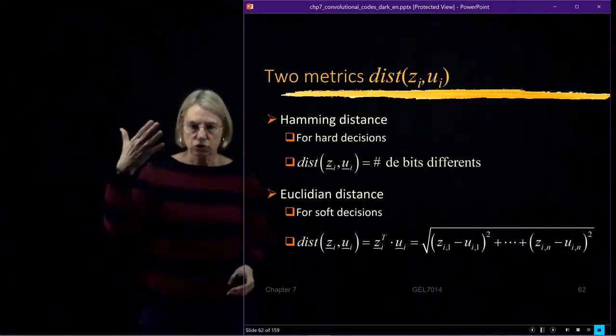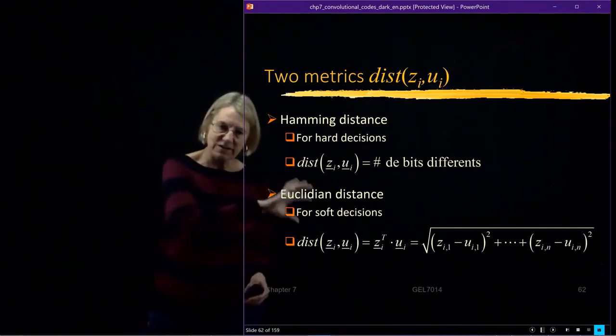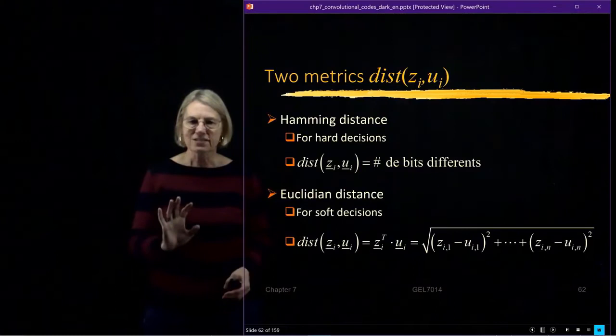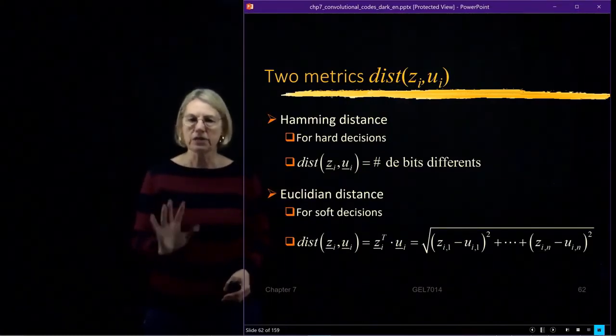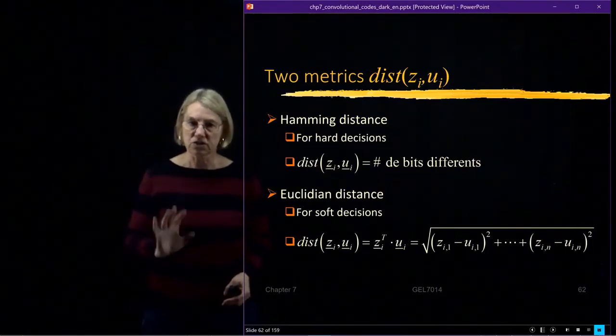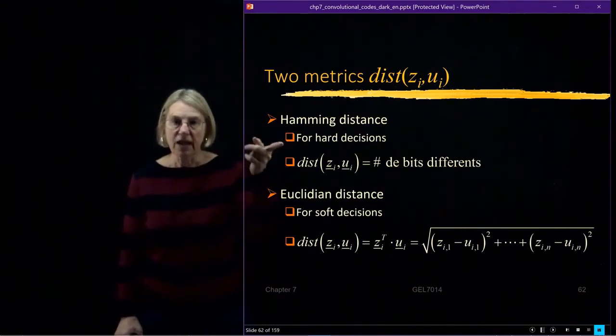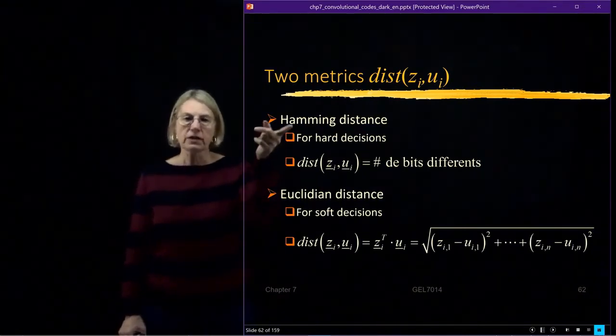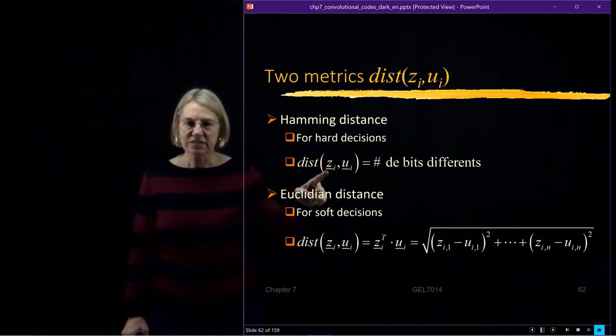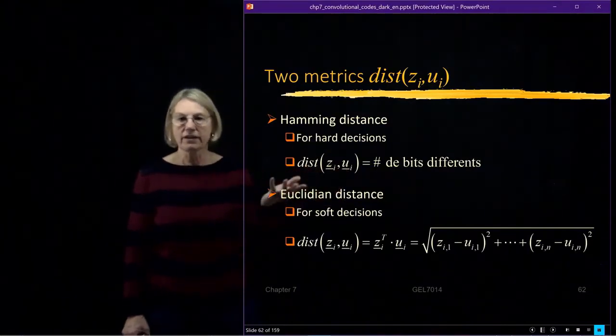Because we have two kinds of information which are transmitted from the demodulator into the decoder, that means that the decoder has two different kinds of metrics that it's going to be using, depending on whether it's dealing with hard decisions or whether it's dealing in soft decisions. As I said, we're going to be looking at hard decisions. And when we work with hard decisions, we're going to be talking about the hamming distance.